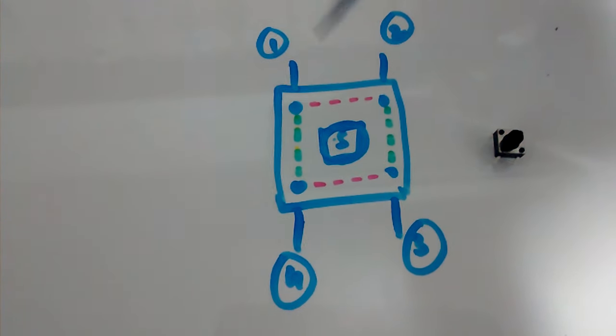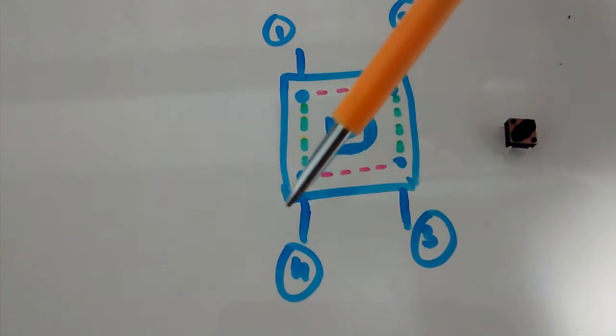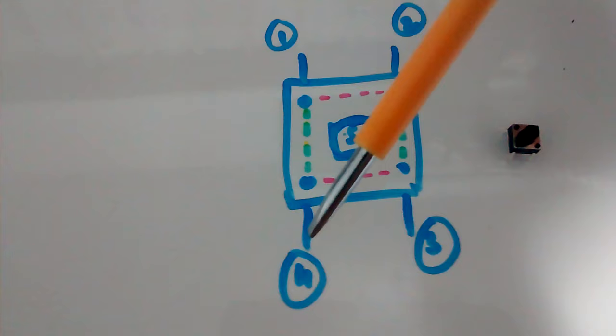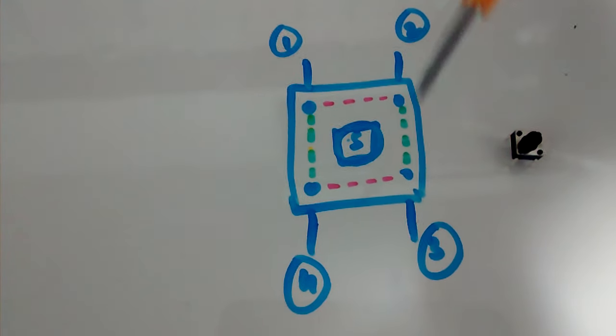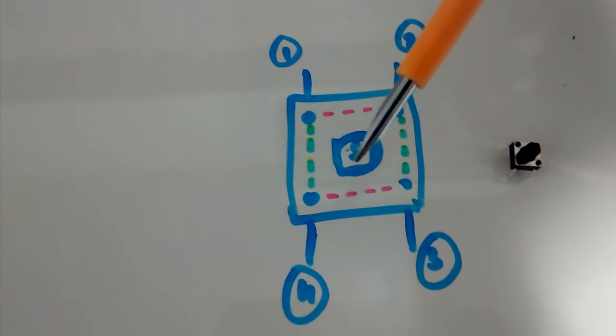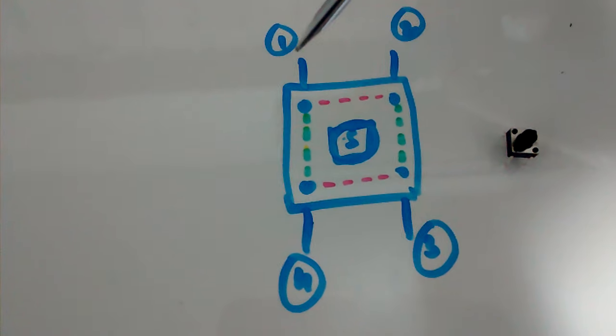So say for example I've given power here, that power will directly go to pin number four also. But pin number one and four are completely disconnected from pin number two and three. Two and three are internally connected. So when I press the switch, the connection between these pins gets active, and the power from pin number one will go to pin number two.